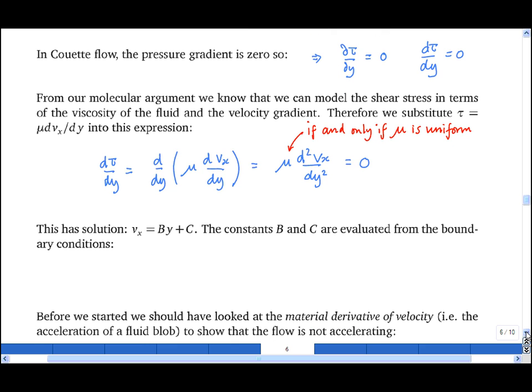And you can integrate that twice to show that the solution is v_x is By plus C. The constants B and C are evaluated from the boundary conditions, and if we set v_x equals zero when y equals zero, then our expression is that v_x is equal to V divided by d times y. In other words, we have the expected result that the velocity varies linearly with y.